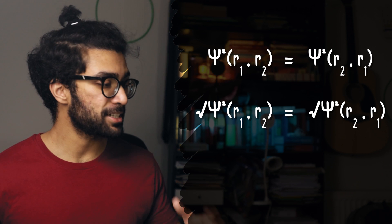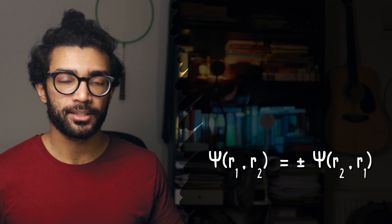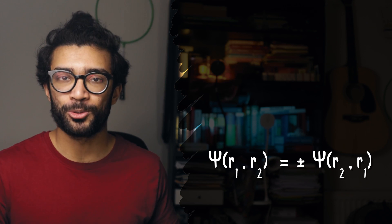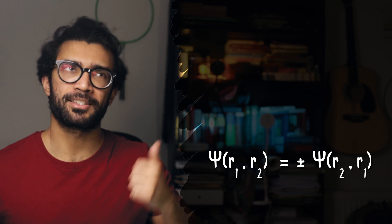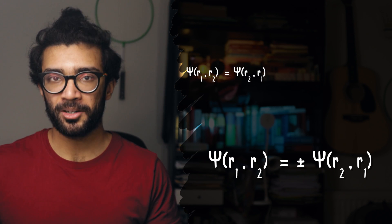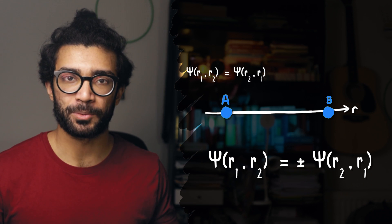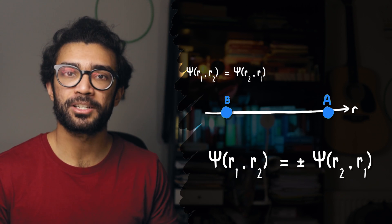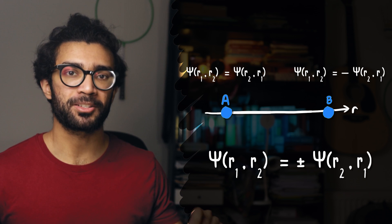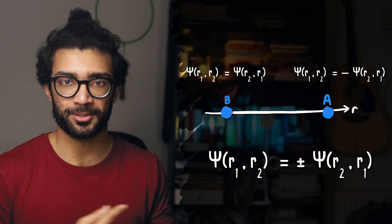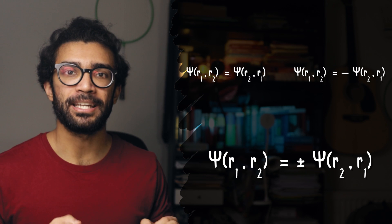Now that we've mathematically encoded our assumption, let's follow the maths through. One thing we can do is take the square root of both sides of our equation. When we take the square root of both sides, we get psi of r1, r2 equals plus or minus psi of r2, r1 — because when we take the square root we have to consider both the positive and the negative root. So we can split this into two separate solutions: the first being psi of r1, r2 equals psi of r2, r1 — the wave function is unchanged when particles are swapped — and the other solution incorporating the negative sign, where the wave function becomes the negative of itself when the particles are swapped.